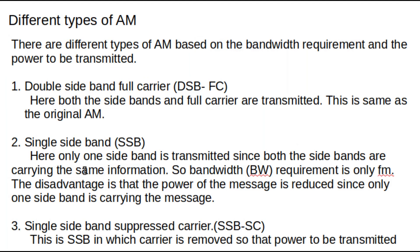Now we will study different types of AM. We have a few types of AM, and for these different types the bandwidth requirement varies. Similarly, the power needed to be transmitted will also vary according to the type of AM. The first type is Double Sideband Full Carrier or DSBFC. As the name indicates, both the sidebands are transmitted — both the lower sideband and the upper sideband — along with the carrier in full. This is our original AM transmission.